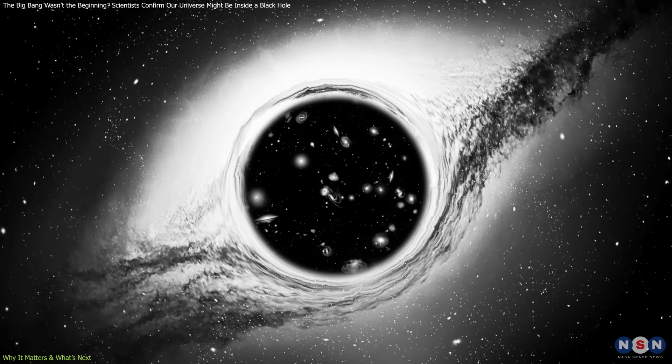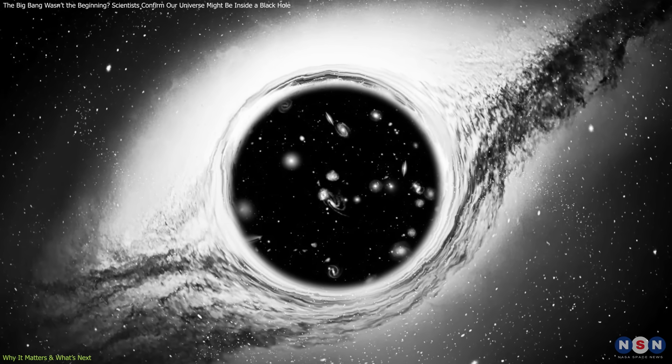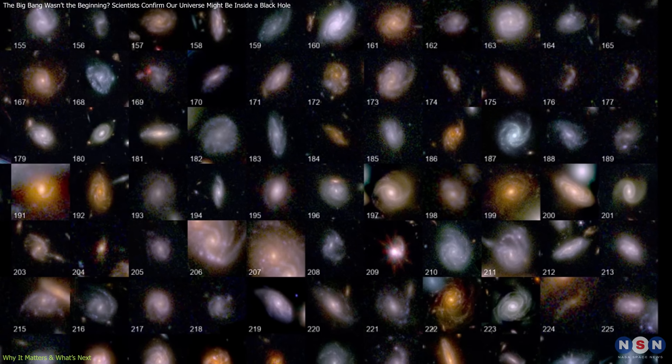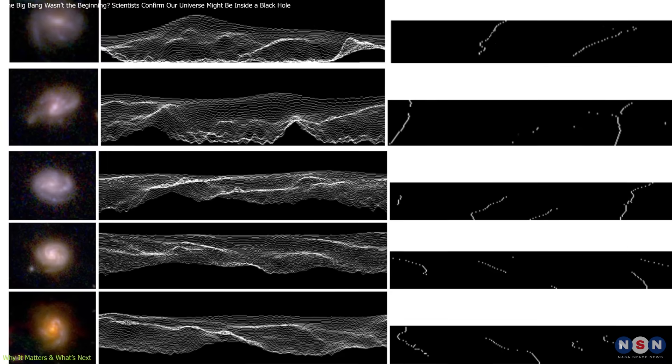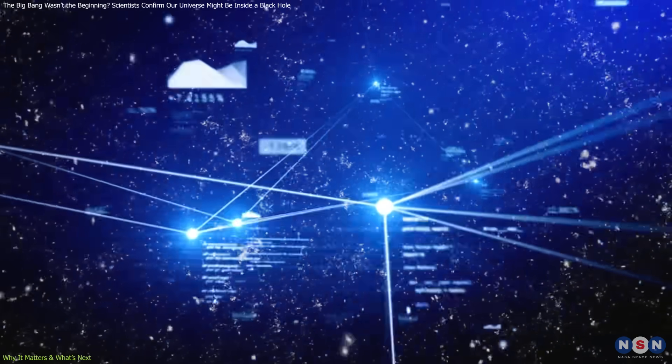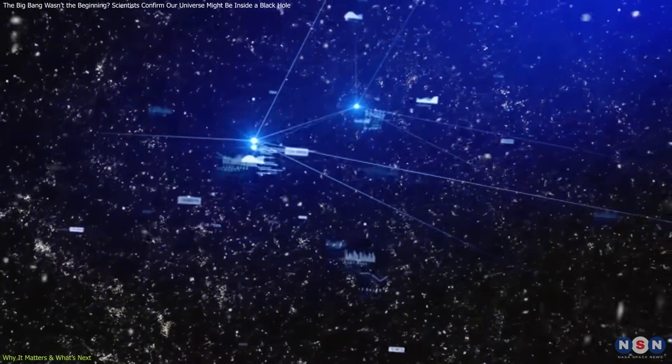But before embracing such a paradigm shift, these findings require much stronger evidence. The current analysis is based on 263 galaxies, a solid start but far from definitive. Researchers need to examine thousands of galaxies across different regions of the sky to confirm whether the rotation bias is universal.